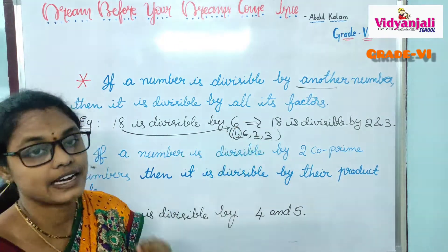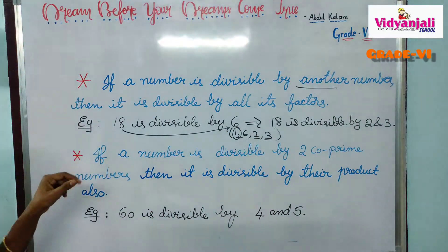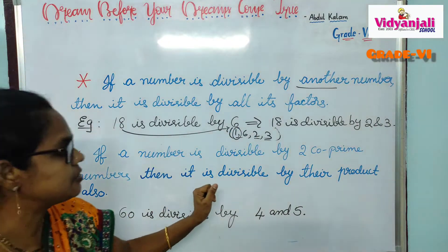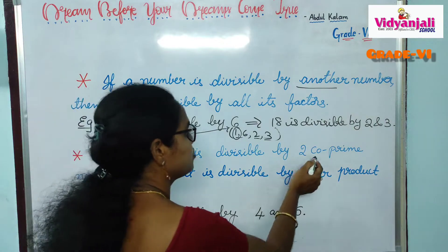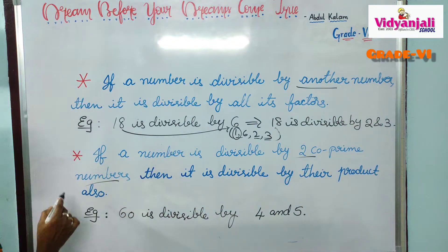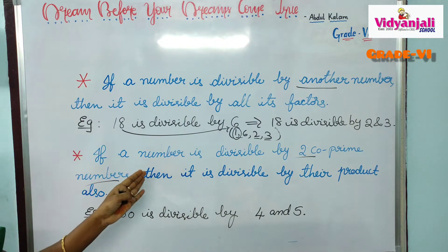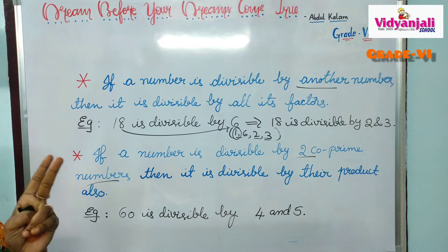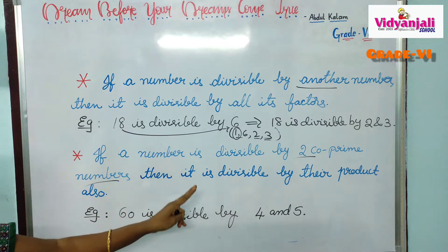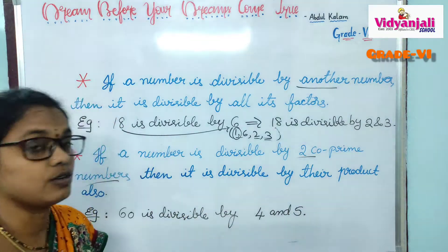2 and 3 are the factors of 6. Okay, next point. If a number is divisible by 2 co-prime numbers, then it is divisible by their product also.